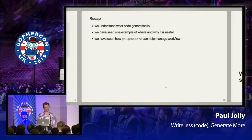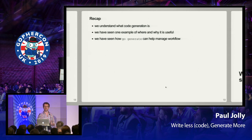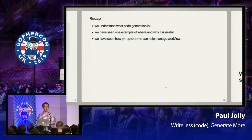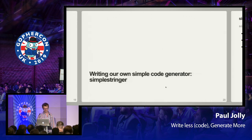So let's have a quick recap. We understand what code generation is. We've seen one example of where and why it's useful, and we've seen how go generate can help with the workflow side of things, because we don't want to be remembering all the different flags we pass to our code generators. So let's actually write our own simple code generator called Simple Stringer.